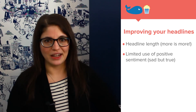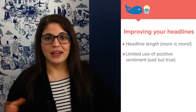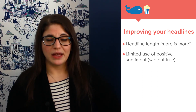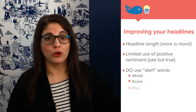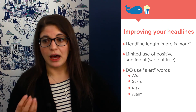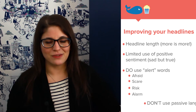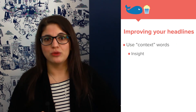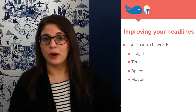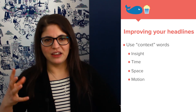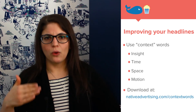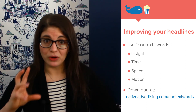Whether that's through making a donation, signing up for more information, or showing up to an event. In keeping with the limited use of positive sentiment, Sharethrough also recommends using what they refer to as 'alert words' in your headline — words like afraid, scare, risk, or alarm. Those are very potent words for getting people to click. They also recommend a limited use of the passive voice. Additionally, they have a PDF linked on the site of over a thousand keywords they refer to as 'context words' — keywords proven through their own data to be most effective in getting people to that top-right quadrant of the Fogg behavioral model, bucketed into categories like time or context.